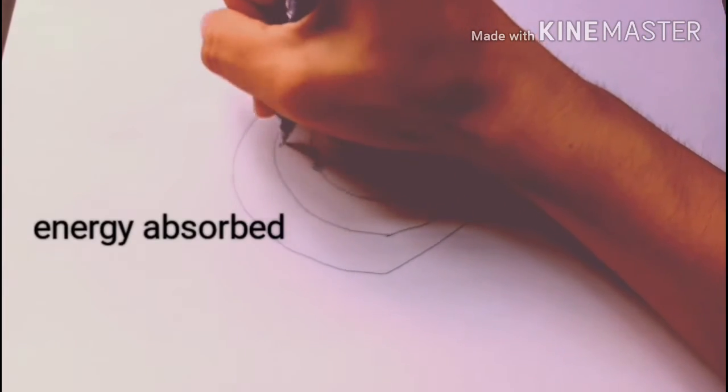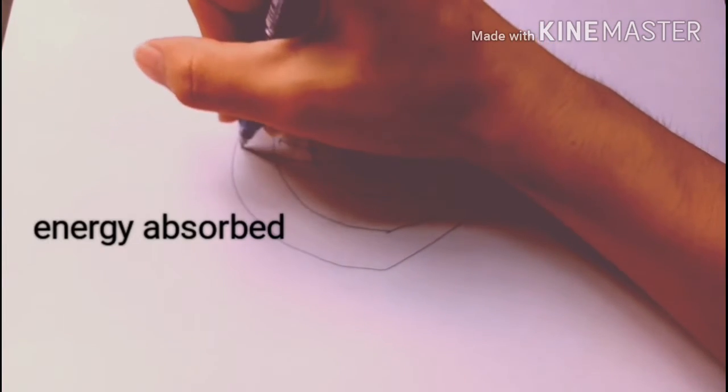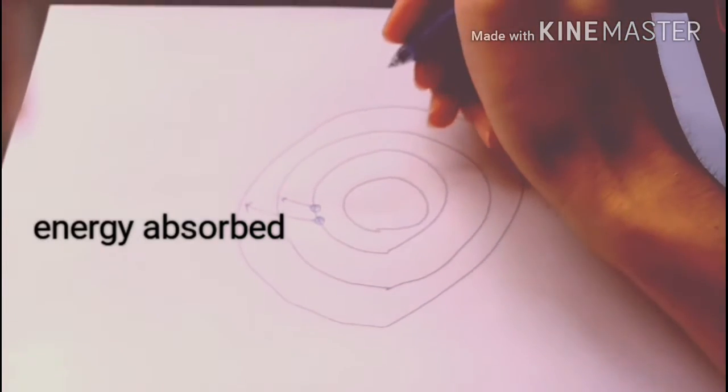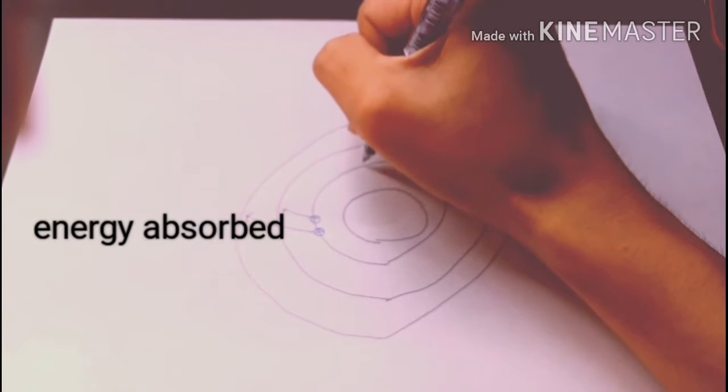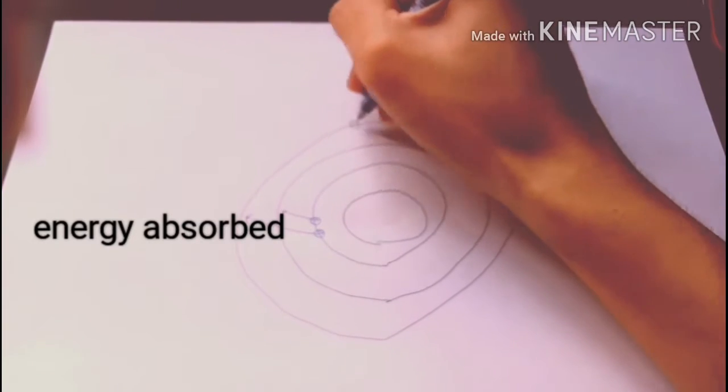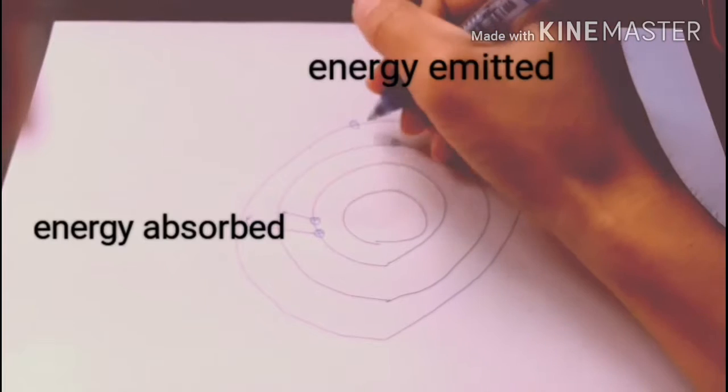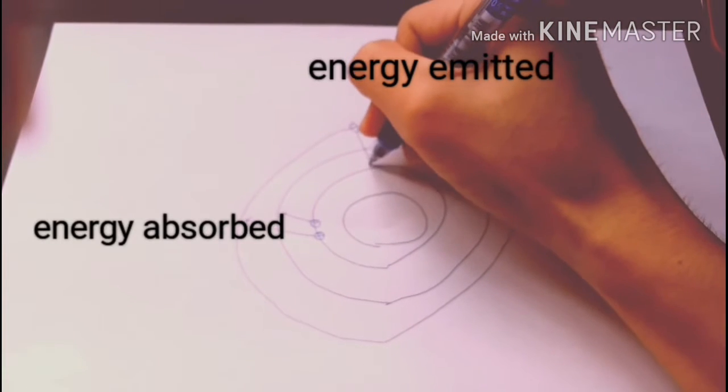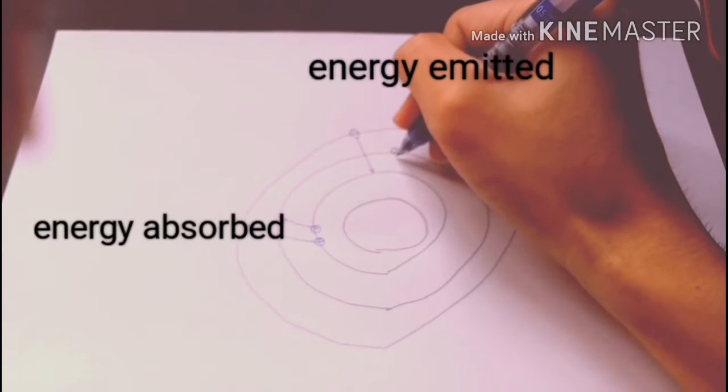Electrons that are nearer to a nucleus have lower energy levels than those that are further away due to the attraction forces of the nucleus. Therefore, valence electrons, which are electrons at the outermost shell of an atom, play an important role in the formation of a chemical bond such as covalent bonding.